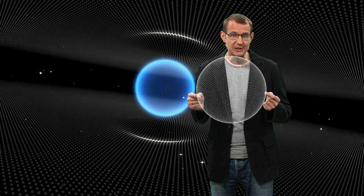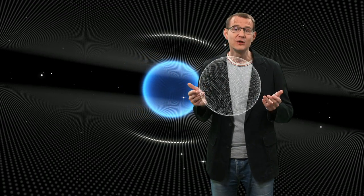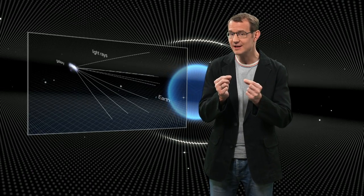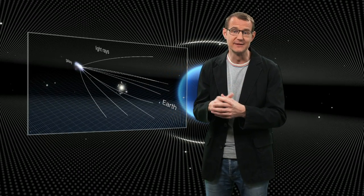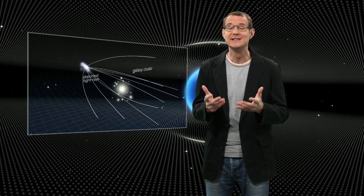And what that means is that when a light ray passes very nearby a massive object that curves the space around it, the light ray is bent.